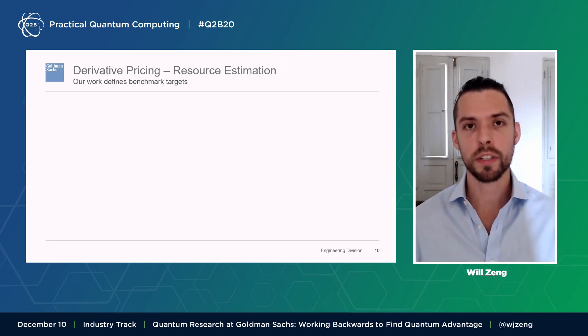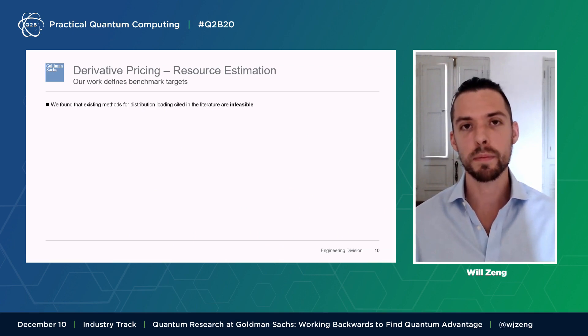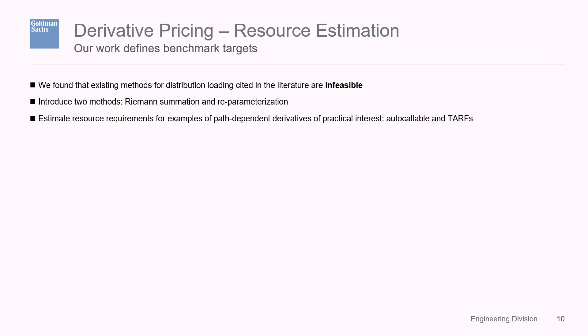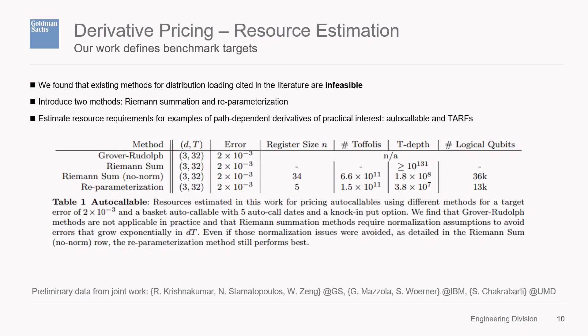Our work is to define benchmark targets for this approach. When we first looked at it, we realized that many proposals in the literature for loading distributions of paths of the underlyings are, in fact, infeasible. So new work introduces new methods: one called Riemann summation and another called the reparameterization method, which allow us to estimate resources for path-dependent derivatives that are truly of practical interest. We focus on two path-dependent derivative types: autocallables and TARFs — target accrual range forwards. I'll refer you to the paper when it comes, but I want to preview what that resource estimation looks like.